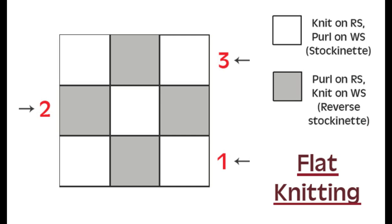Reading from number two from left to right: a grey square is a knit stitch, white square is a purl stitch, grey square is a knit stitch. Then on row three, a right side row reading right to left: white square is knit, grey square is purl, white square is knit. And that's how you would read this particular chart.